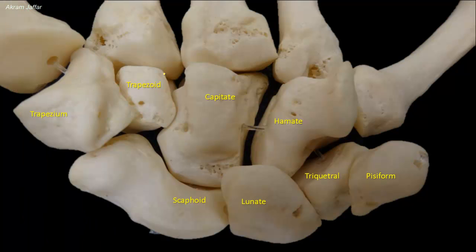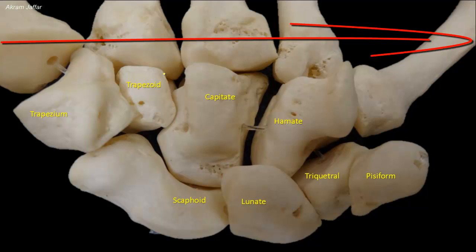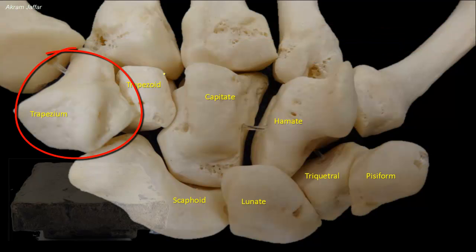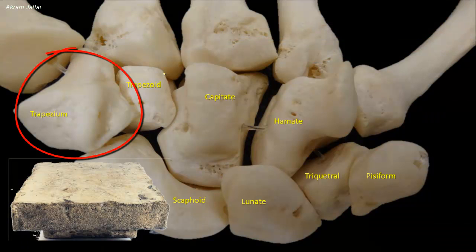The four carpal bones in the distal row are, from lateral to medial: trapezium, trapezoid, capitate, and hamate. The trapezium — trapezi means table — is a four-sided bone.